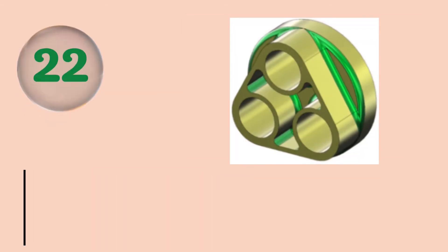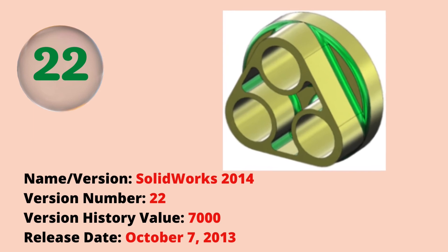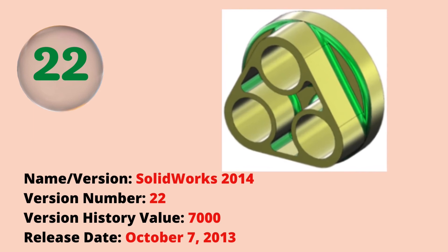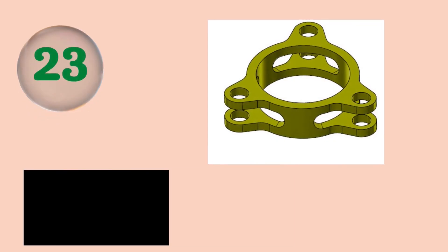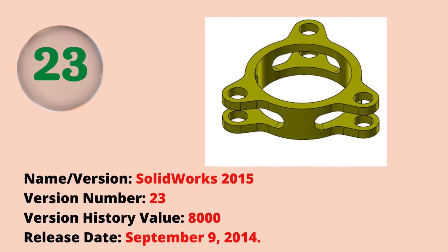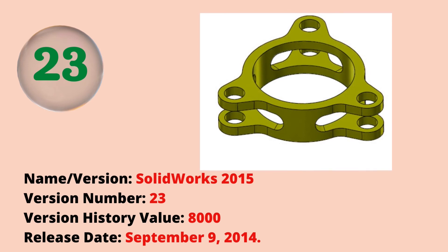The twenty-second version was SOLIDWORKS 2014 with a version history value of 7000. The release date was October 7, 2013. The twenty-third version was SOLIDWORKS 2015 with a version history value of 8000. The release date was September 9, 2014.